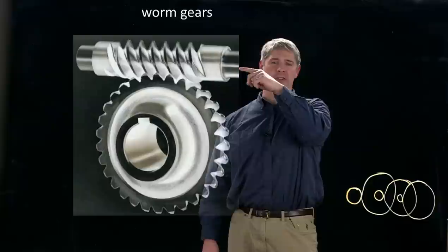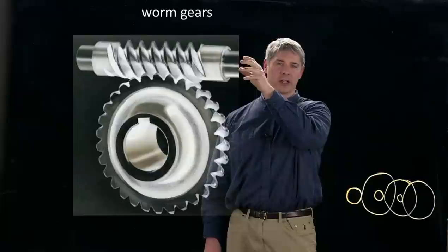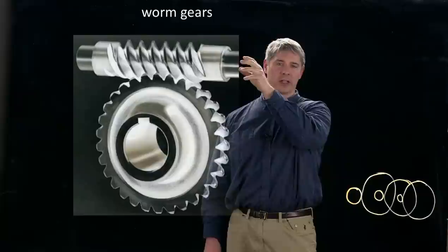These are called worm gears. So this piece up here is called the worm, and it's spinning the worm gear. And with this, you can see that the speed is greatly reduced. If this is spinning quickly, then the worm gear here is going to be spinning much more slowly.